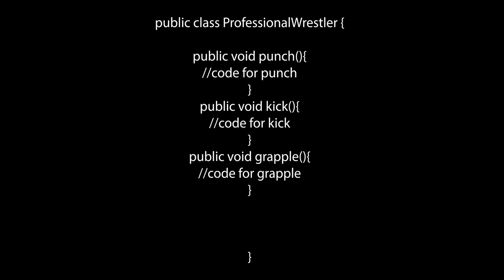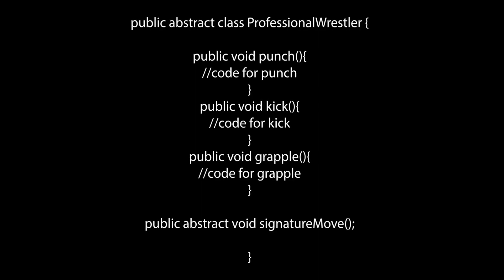I could just leave out the signature move method in the superclass and expect creators of the subclass to implement their own signature move methods, which is a decent idea. However, I might get a developer who does not understand professional wrestling simply forgetting to implement the signature move method in their subclass.